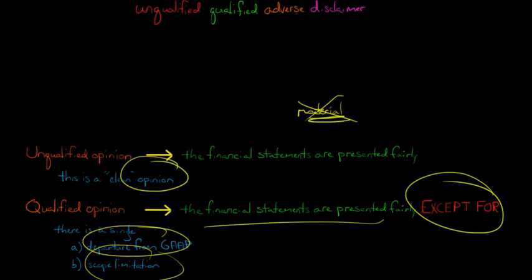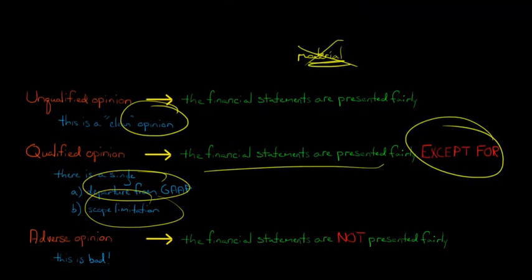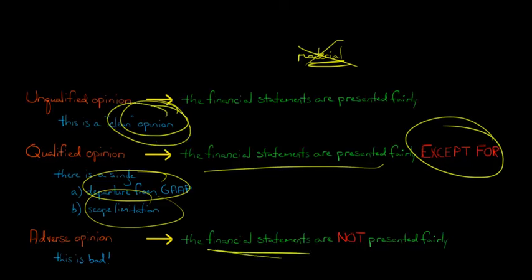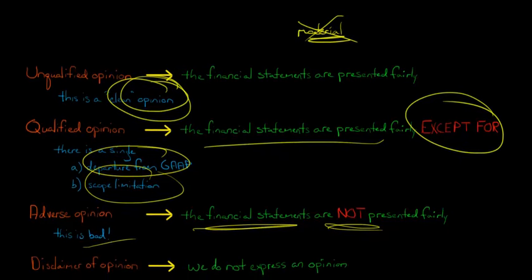If there's a more serious scope limitation where the auditor can't even do the audit, we'll talk about that in a moment. An adverse opinion is basically the opposite of a clean opinion. The auditor has looked at the financial statements and they're saying they are not presented fairly, they are not presented according to GAAP. We cannot give you reasonable assurance that there are no material misstatements here, because it looks like there are material misstatements. The company does not want an adverse opinion — it's basically saying that your financial statements are not reliable, that an investor should not be able to trust that information.